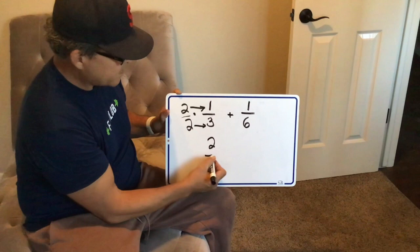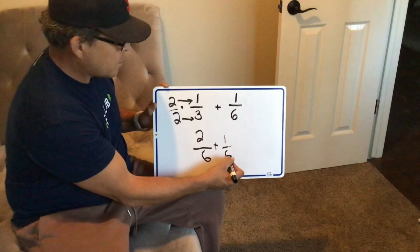Multiply straight across. 2 times 1 is 2. 2 times 3 is 6.